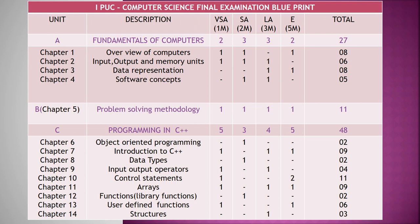Chapter two is Input, Output, and Memory Units. It has one one-mark question, one two-mark question, and one three-mark question, carrying six marks overall. Chapter three is Data Representation, with one three-mark question and one five-mark question, totaling eight marks. Chapter four is Software Concepts, with one two-mark question and one three-mark question, carrying five marks total.